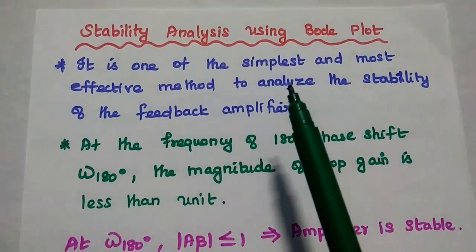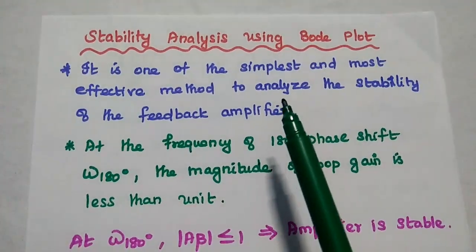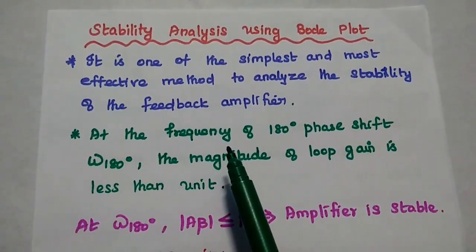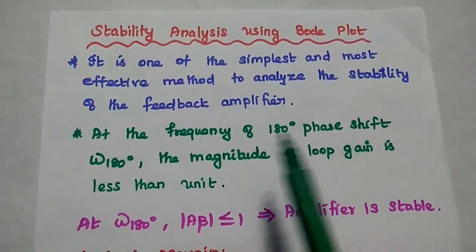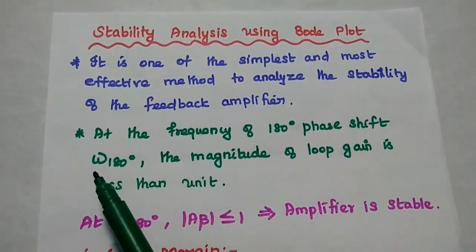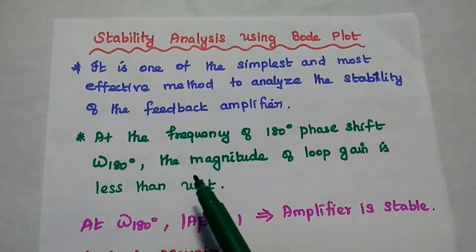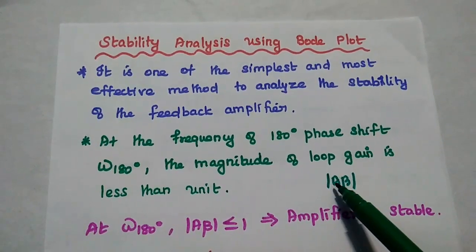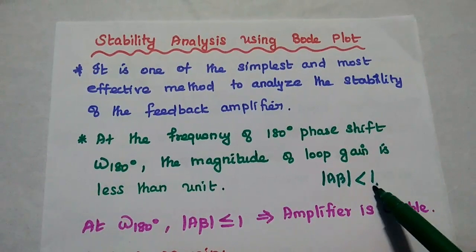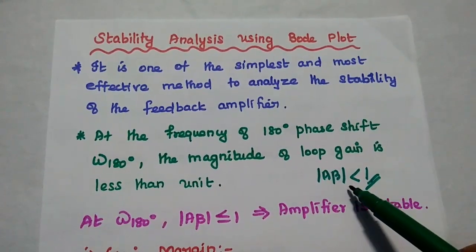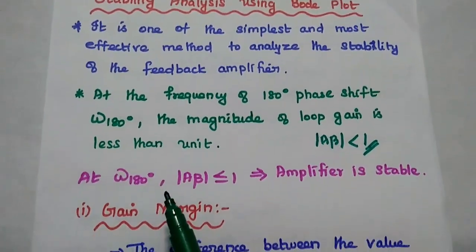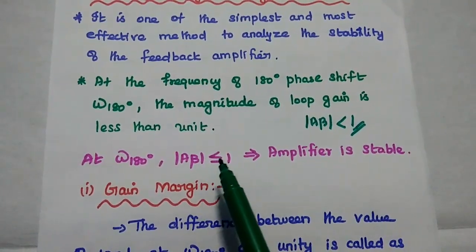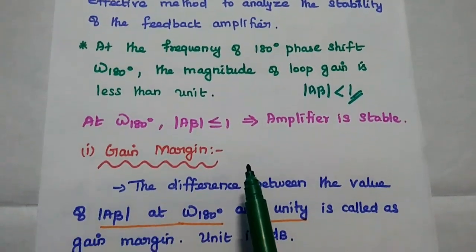The next method is stability analysis using the Bode plot method. It is one of the simplest and most effective methods to analyze the stability of the feedback amplifier. In this method, we consider the frequency at which a 180-degree phase shift occurs, represented as omega-180. At this frequency, the magnitude of the loop gain must be less than unity, i.e., |A·beta| less than 1. This is the condition for stability of the feedback amplifier.